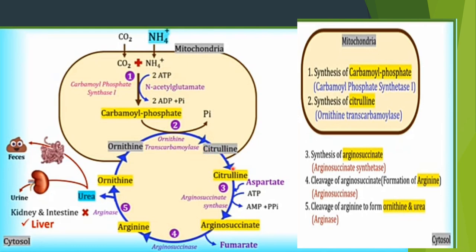When citrulline is formed in the mitochondria, the remaining steps occur in the cytosol. Citrulline is transported back through the ornithine-citrulline transporter and reaches the cytosol, where the remaining steps of the urea cycle occur.